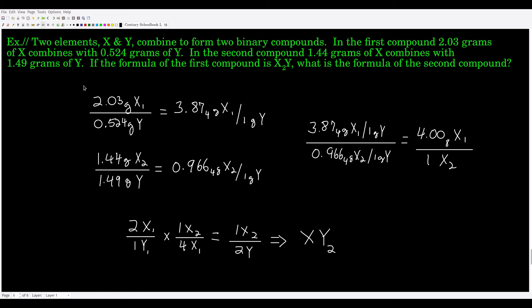Another way to use the law of multiple proportions: suppose two elements X and Y form two different binary compounds. In the first compound, there are 2.03 grams of X for every 0.524 grams of Y. In the second compound, 1.44 grams of X for every 1.49 grams of Y. Normalizing to one gram of Y, the first compound has 3.874 grams of X per gram of Y, and the second has 0.9664 grams of X per gram of Y. Taking the ratio gives about 4 — meaning there are 4 atoms of X in the first compound for every 1 atom of X in the second compound.